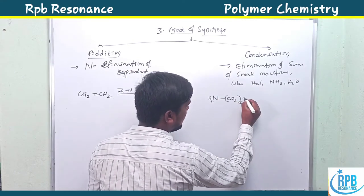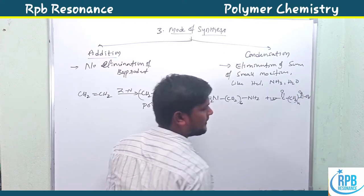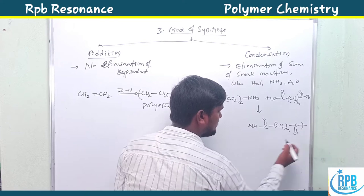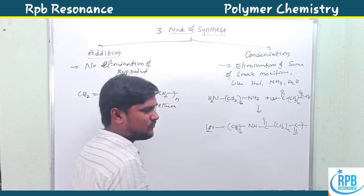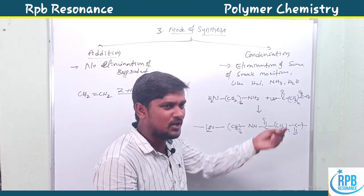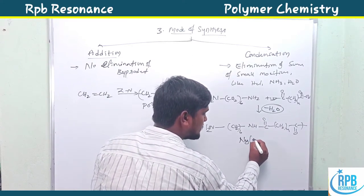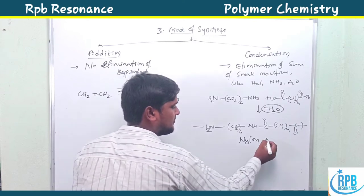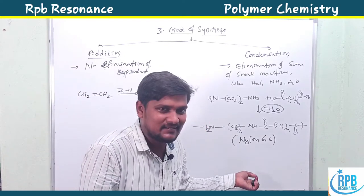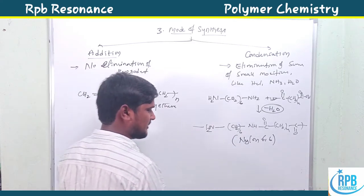In condensation polymerization, hexamethylenediamine reacts with adipic acid (HOOC–(CH₂)₄–COOH). The NH₂ and COOH groups combine with elimination of water molecules, giving nylon 6-6. The first monomer has six carbons and the second also has six carbons, hence nylon 6-6. This elimination of small molecules like H₂O is characteristic of condensation reactions.